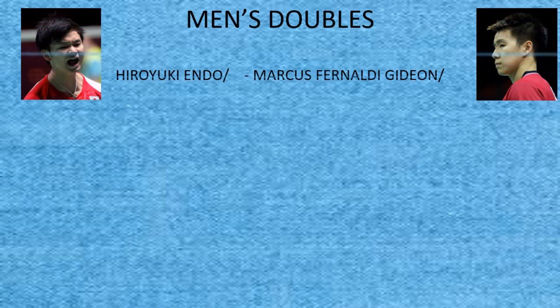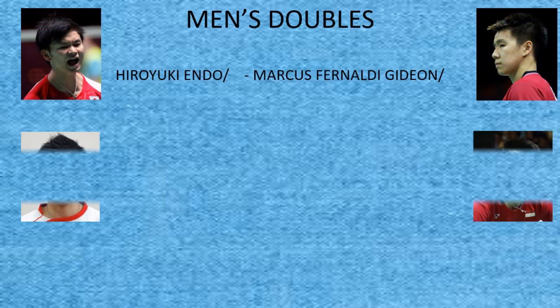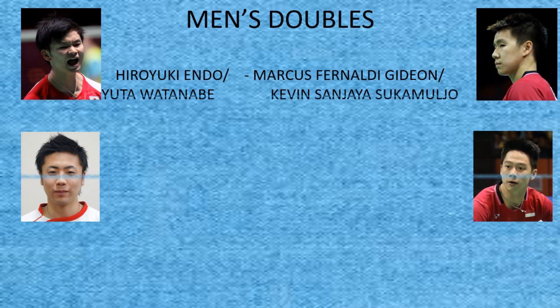In Men's Doubles, the Japanese pair defeated the Indonesian pair by 21-18, 21-21, 21-19.